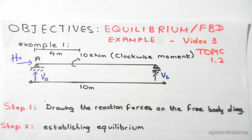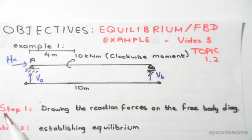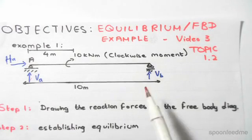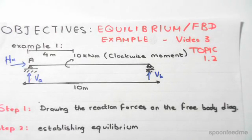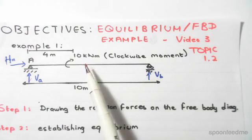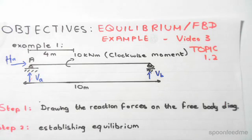The following simply supported beam has a length of 10 meters. From here to here we have 10 meters. We have a clockwise moment of 10 kilonewton meters, four meters from the left hand pin.